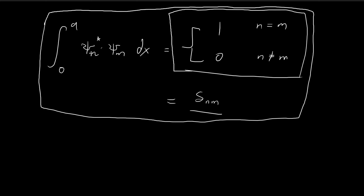In the last video, we proved that ξn and ξm are mutually orthogonal, provided that n is not equal to m. I promised you that this property will come in useful later on, and that is what I will try to show you now.